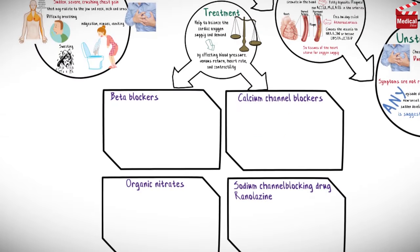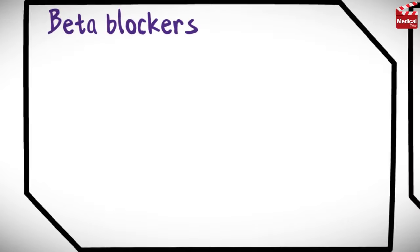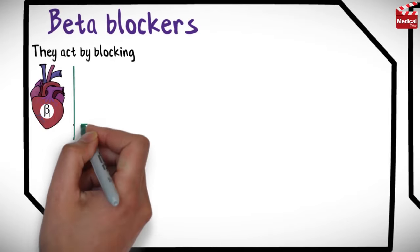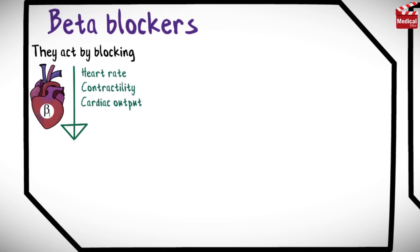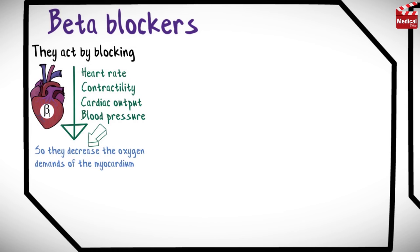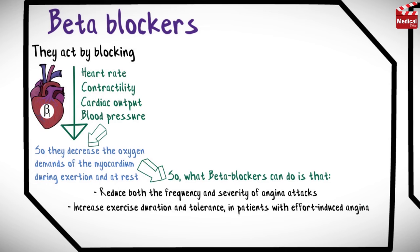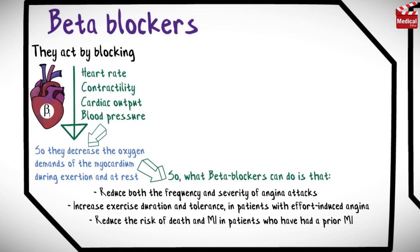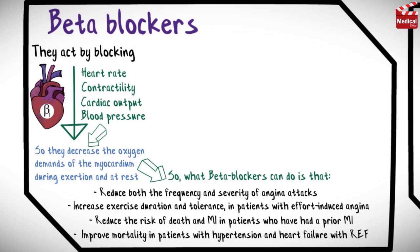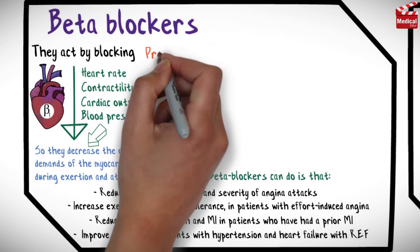There are four types of drugs used for angina, alone or in combination: beta blockers, calcium channel blockers, organic nitrates, and the sodium channel blocking drug ranolazine. Beta blockers act by blocking beta-1 receptors, resulting in decreased heart rate, contractility, cardiac output, and blood pressure, thereby decreasing the oxygen demand of the myocardium. They reduce both the frequency and severity of angina attacks, increase exercise duration and tolerance in effort-induced angina, and reduce the risk of death and myocardial infarction in patients with prior MI.